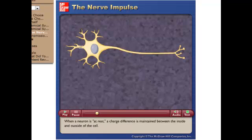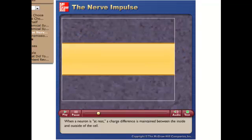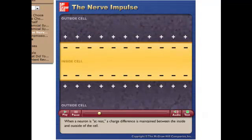When a neuron is at rest, a charge difference is maintained between the inside and outside of the cell.